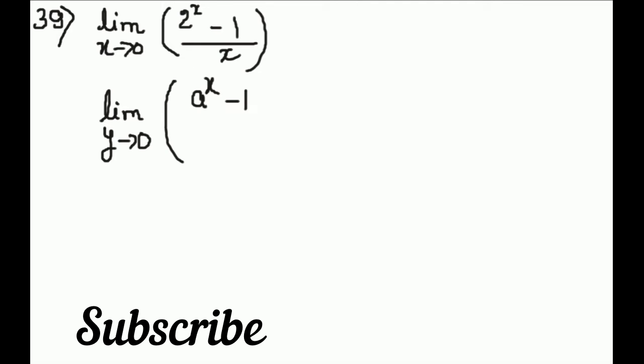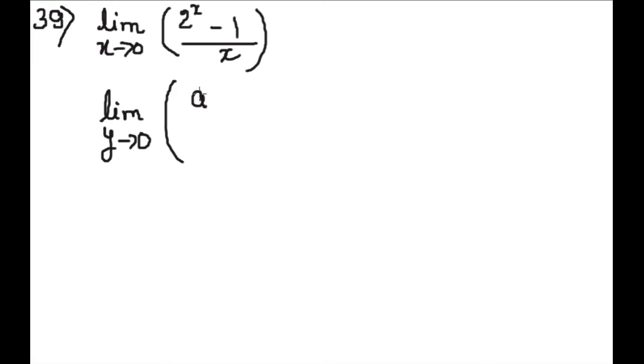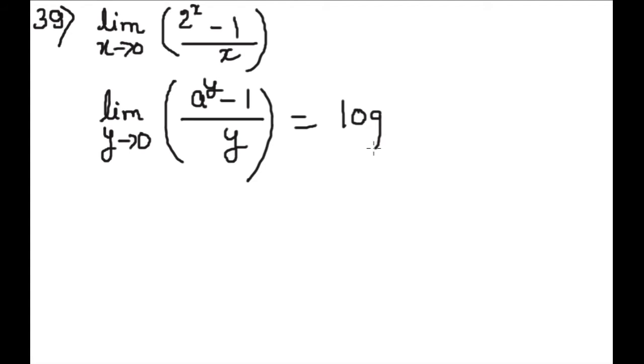हमारे पास एक formula है: Limit of y is 0, a to the power y minus 1 by y is equal to log a होता है। यहाँ पे limit जिसकी है वही यहाँ भी होना चाहिए और वही यहाँ भी होना चाहिए, तो log a होगा। (We have a formula: lim(y→0) (a^y − 1)/y = log a. The variable in the limit must match the one in the power and denominator.)